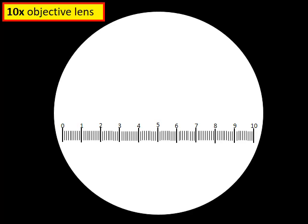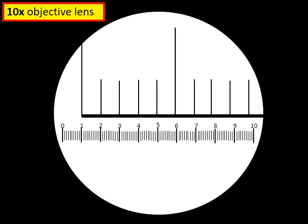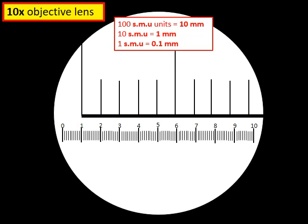Every time we change the objective lens, we have to recalibrate the microscope. We've now moved from the four times to the ten times objective lens. The eyepiece graticule scale in the eyepiece looks exactly the same, but when we place the stage micrometer under the ten times objective lens, we expect it to appear two and a half times bigger, because the ten times objective lens has two and a half times more magnification.